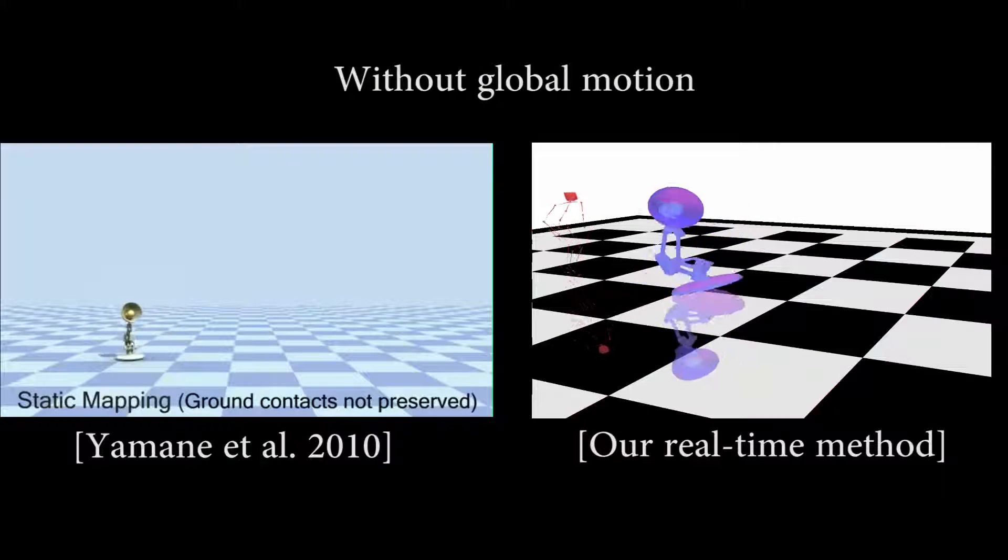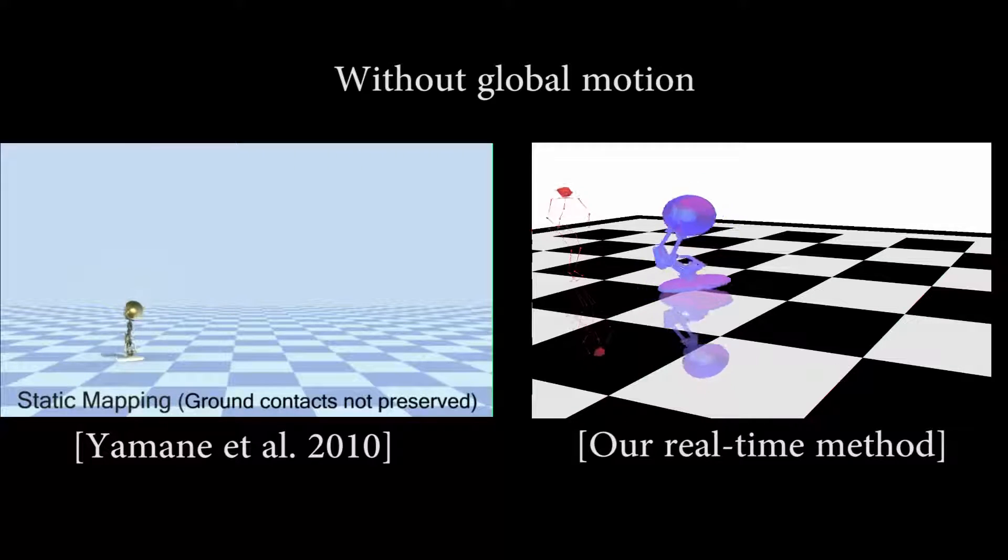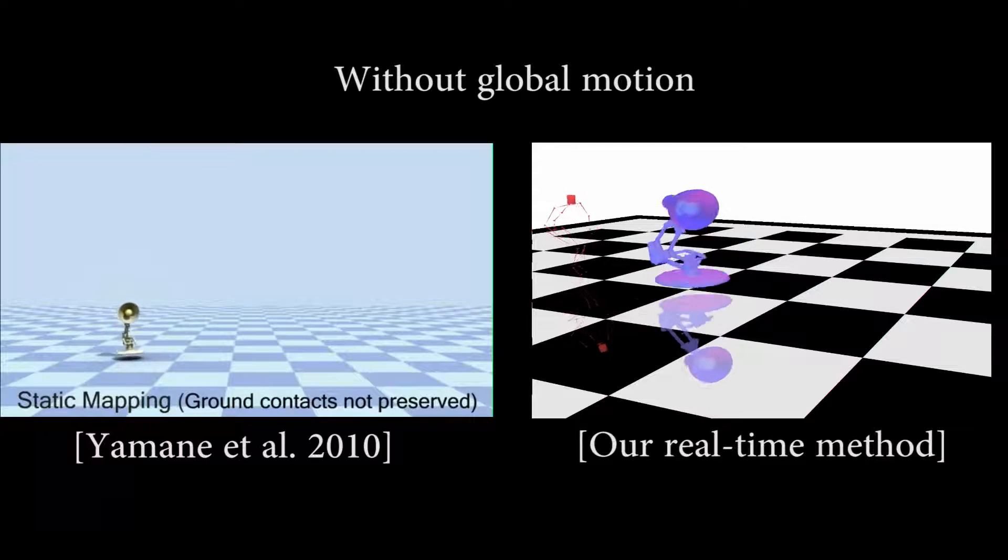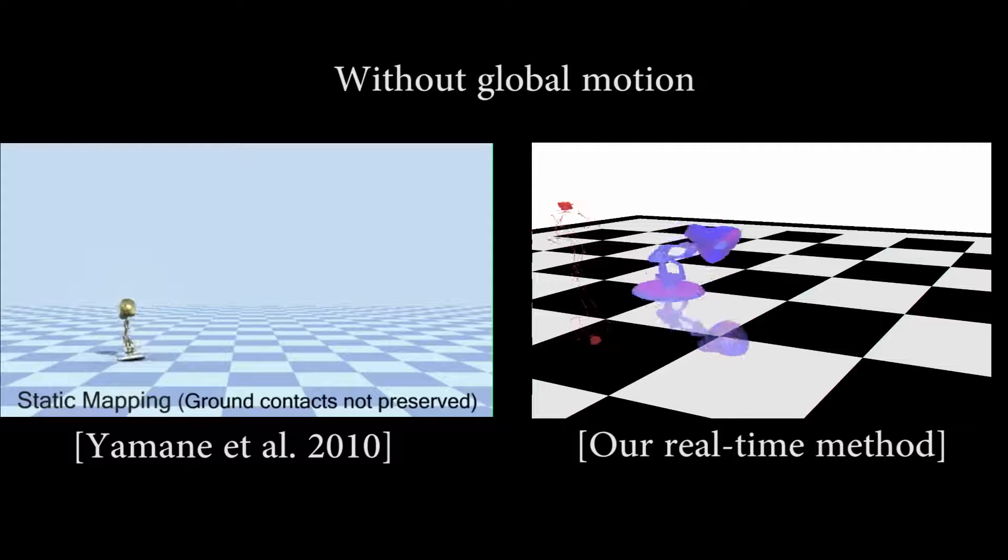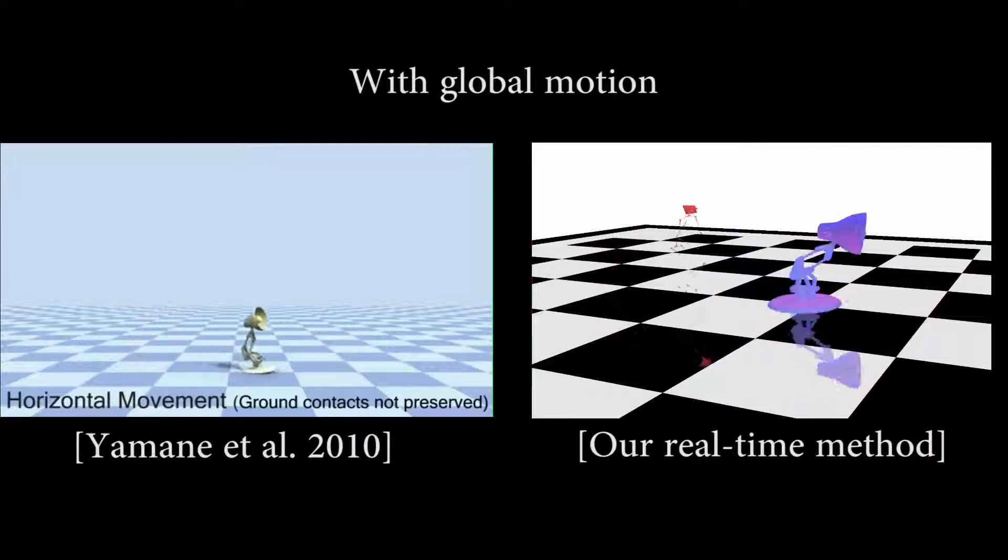Yamane et al. describe an offline approach to map exact motions of a human character to a target creature with somewhat similar morphology. While we solve different problems, our approach produces acceptable results for a real-time solution.